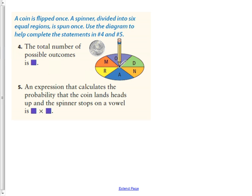Question 4 and 5 has to do with this diagram. It says a coin is flipped once, and a spinner divided into 6 equal regions is spun once. Use the diagram to help complete the statements in 4 and 5. The total possible number of outcomes. Well, in event 1, there are 2 possible outcomes, either a head or a tail. And in event 2, there are 6 possible outcomes, either M, O, N, D, A, or R. So the total possible number of outcomes by the grade 8 standard, there are 12 possible outcomes in total.